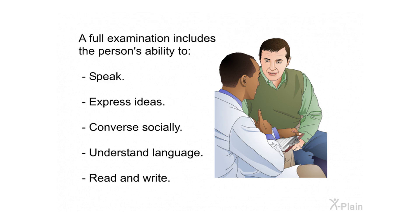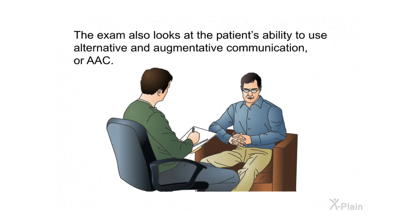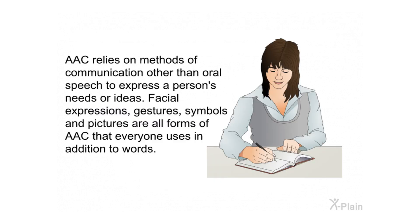A full examination includes the person's ability to speak, express ideas, converse socially, understand language, read, and write. The exam also looks at the patient's ability to use alternative and augmentative communication, or AAC. AAC relies on methods of communication other than oral speech. Facial expressions, gestures, symbols, and pictures are all forms of AAC that everyone uses in addition to words.